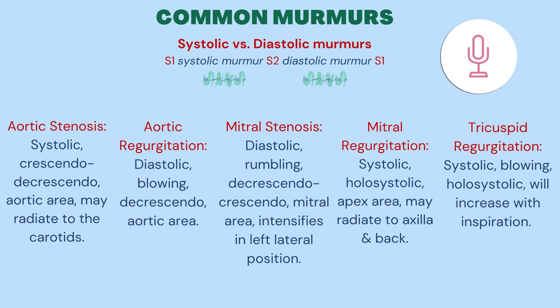S2 is best heard at the base, and represents the closure of the aortic and pulmonic valves. In aortic stenosis, you will hear a systolic crescendo-decrescendo murmur, which means that the sound starts loud and then gets softer. It's located in the aortic area and frequently radiates to the carotids.